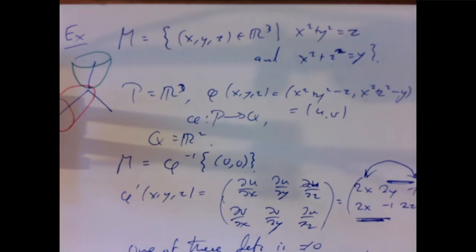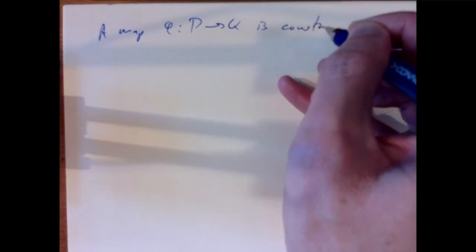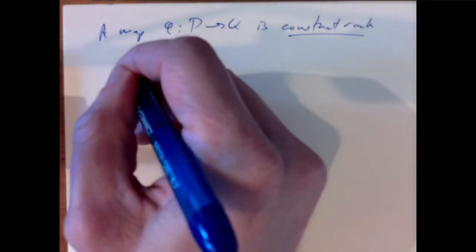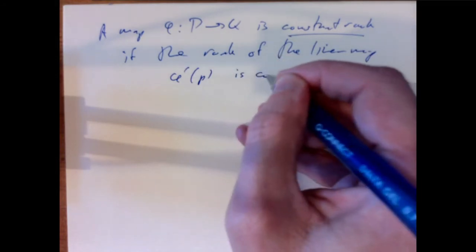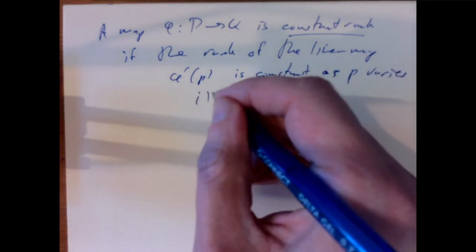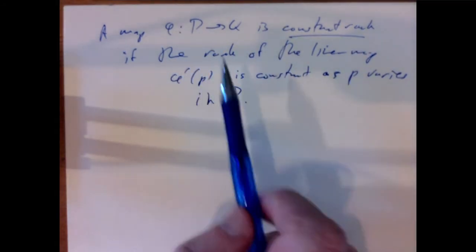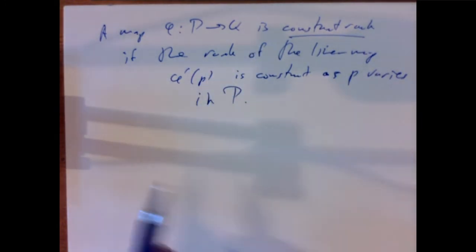Finally, we want to state the rank theorem on manifolds. A smooth map φ: P → Q is said to be of constant rank if the rank of the linear map φ′(p): T_pP → T_{φ(p)}Q is constant as p varies in P.